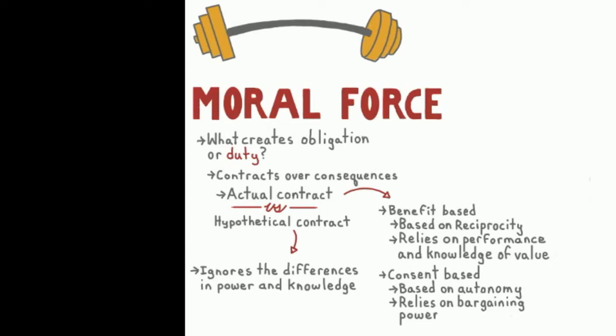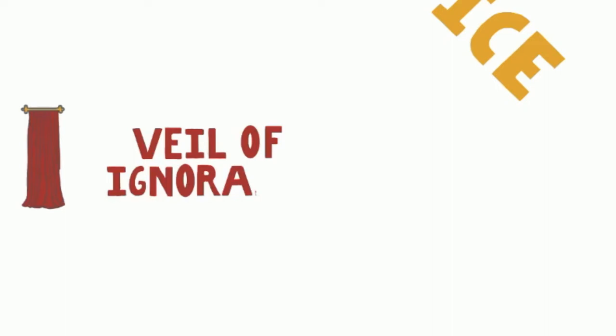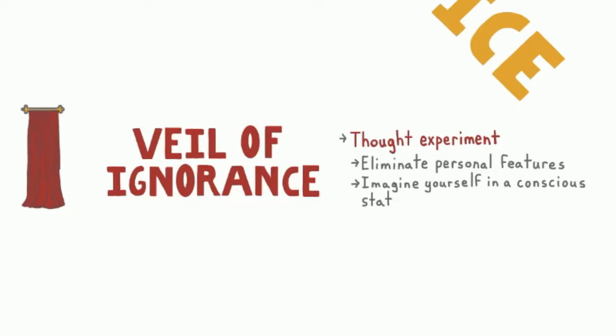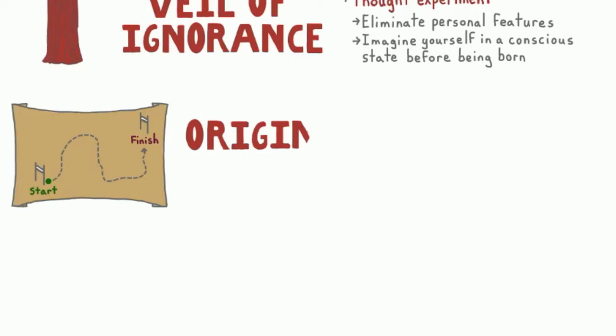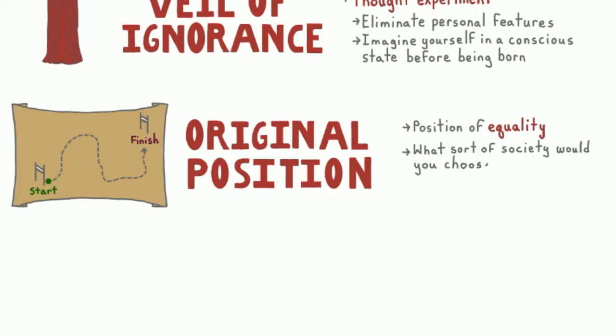The Theory of Justice asks us to put ourselves behind a veil of ignorance as a thought experiment. Behind the veil, we eliminate our personal features and imagine ourselves in a conscious state before we were born. This state, known as the original position, tries to bring us closer to a position of equality. In this position, we should ask ourselves: what sort of society would I want to be born into?